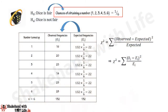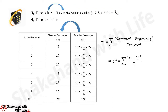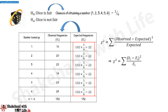Now we calculate the expected or theoretical frequencies. When a fair dice is rolled, the chances of obtaining any one number out of six numbers — 1, 2, 3, 4, 5, 6 — are equal and equal to 1/6. The dice is rolled 132 times, so theoretically the frequency distribution should be: for 1 it is 132 × 1/6 = 22, for 2 it is also 22, for 3 it is also 22, and so on — 22 for 4, 22 for 5, and 22 for 6.